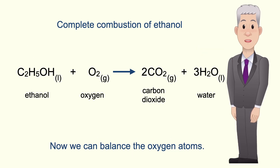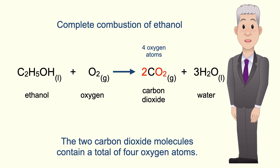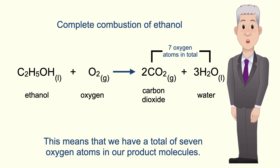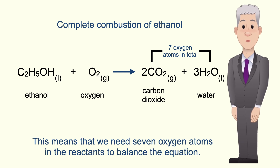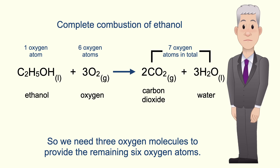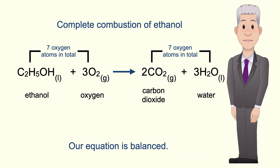Now we can balance the oxygen atoms. First we need to add up all of the oxygen atoms in the product molecules. The two carbon dioxide molecules contain a total of four oxygen atoms and the three water molecules contain a total of three oxygen atoms, giving us a total of seven oxygen atoms in our products. This means we need seven oxygen atoms in the reactants to balance the equation. Ethanol contains one oxygen atom, so we need three oxygen molecules to provide the remaining six oxygen atoms. We now have seven oxygen atoms in the reactants and our equation is balanced.